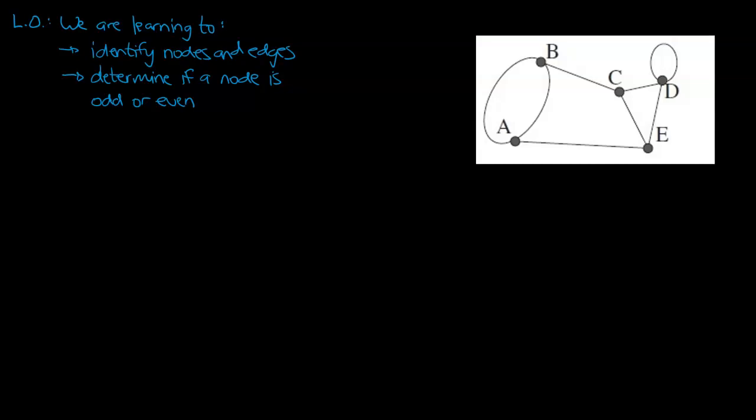Hey guys, Mr. Bowman here. Today's learning objective is in blue. We've got two learning objectives that we're trying to get through today. First one is we're trying to identify nodes and edges of a network. We'll run through what that means. And after that, we're going to determine if a node is an odd or an even node.